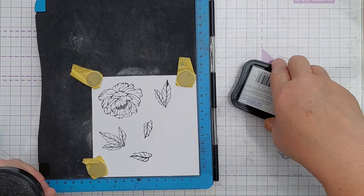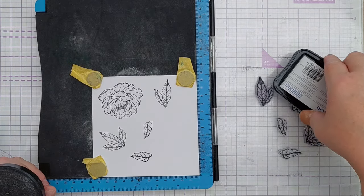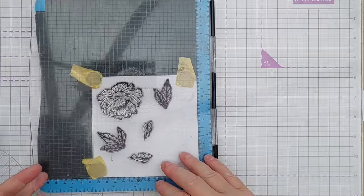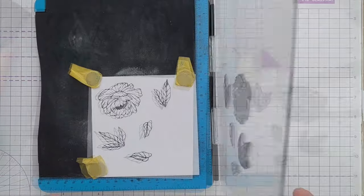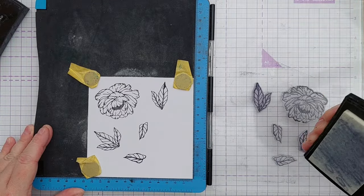I did stamp them twice just to get a really nice deep black image, and then I stamped them again with embossing ink because I wanted to clear emboss over the Stazon.